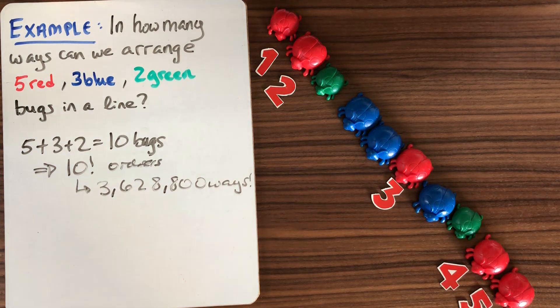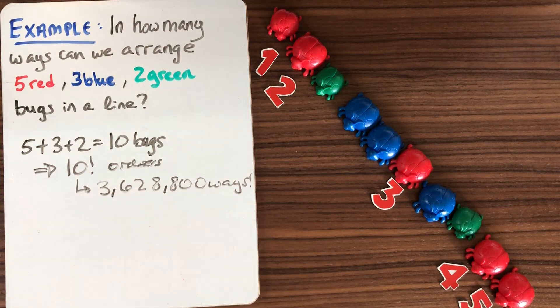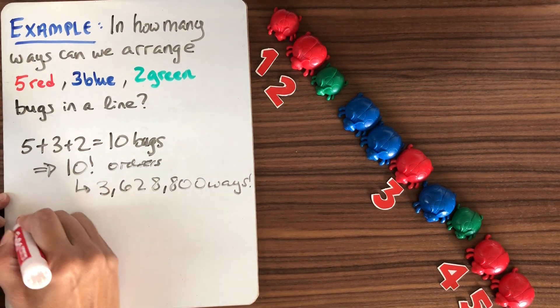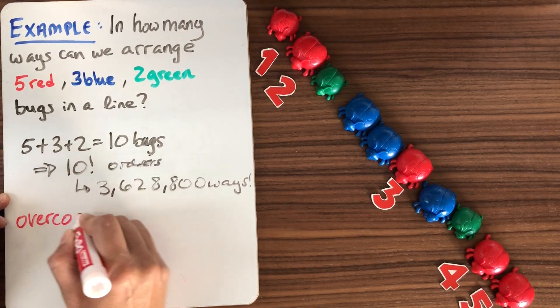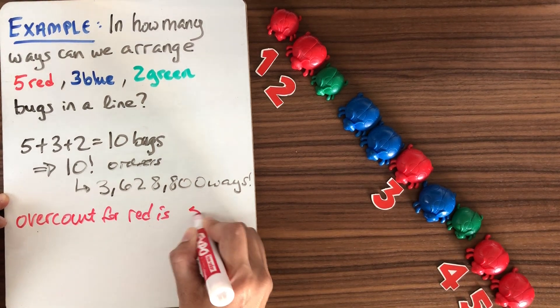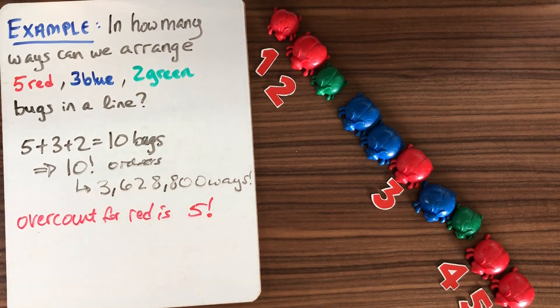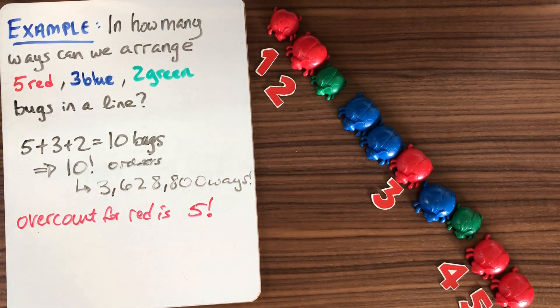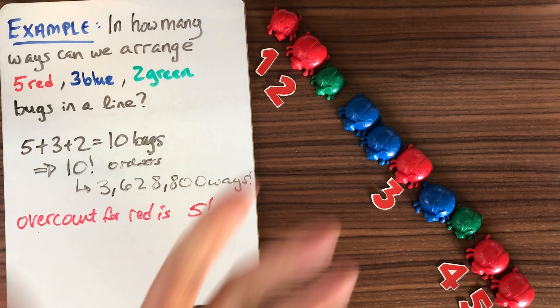then I can think about what have I overcounted by, right? I've overcounted by the number of ways to arrange those five numbers. So my overcount for the red bugs is 5 factorial. It's because I can do any permutation of these five bugs, rearrange any of those red bugs, and I still get the same linear order.